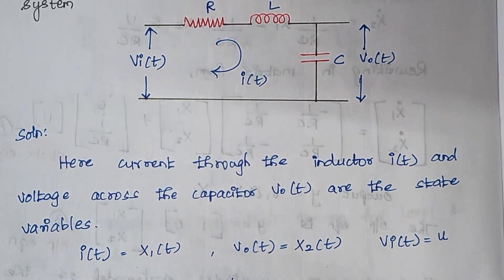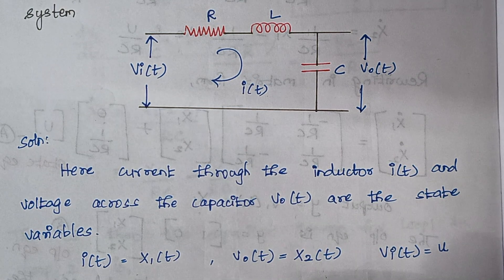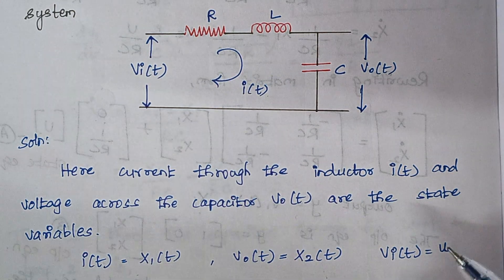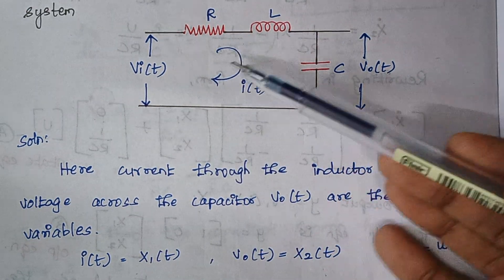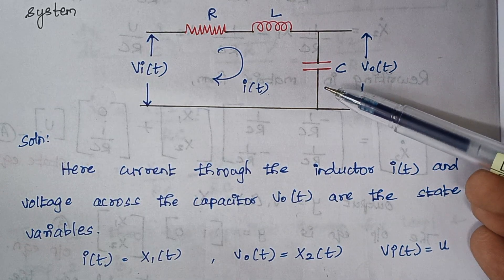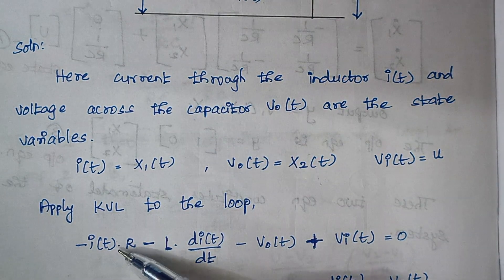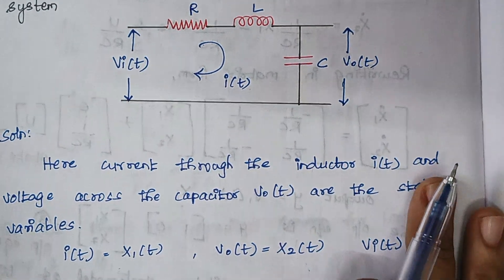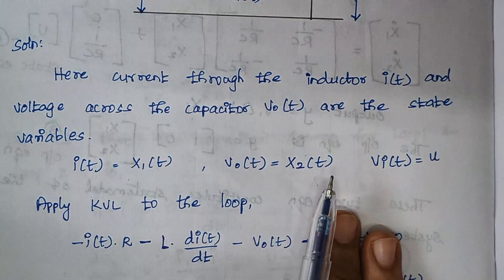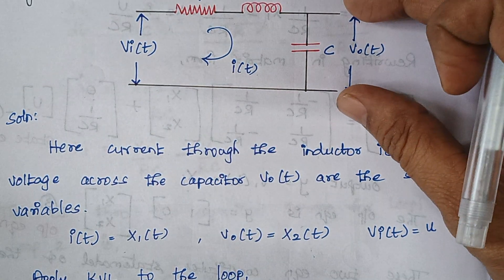Now we are going to apply KVL to this loop. Kirchhoff's Voltage Law states that the sum of voltage drops in a circuit is equal to zero. So here we write the expression for the voltage drop across the resistor, across the inductor, and across the capacitor. The voltage drop across the resistor is I(t) × R, and the voltage drop across the inductor L is given by L × dI(t)/dt.